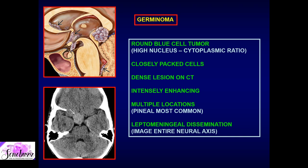Moving on to the final type of primitive cell line tumor — germinoma. Germinoma is very similar to lymphoma or primitive neuroectodermal tumor due to histology: it is a round blue cell tumor with a high nucleus-to-cytoplasm ratio and densely packed cells. On imaging it is very similar to PNET or lymphoma — a dense lesion on CT, iso to hyperintense mass on T1 and T2, with intense enhancement.